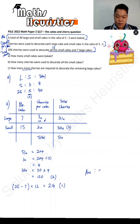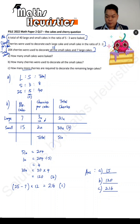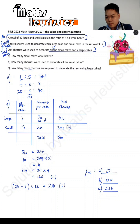So your answers are: Part A is 15, Part B is 120, and Part C is 216. All right, thank you.